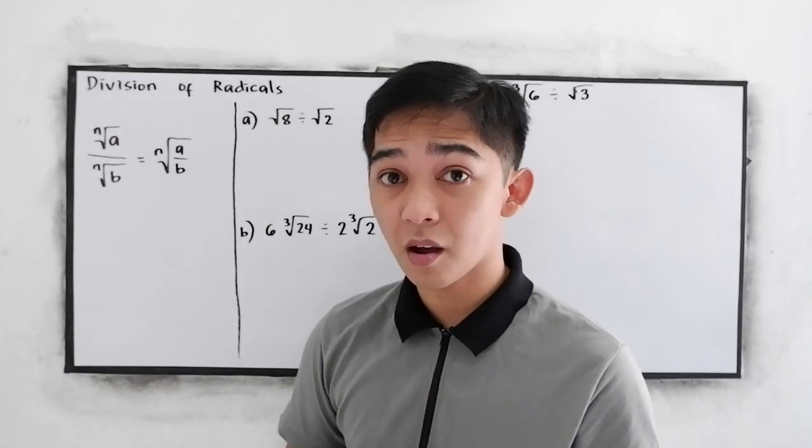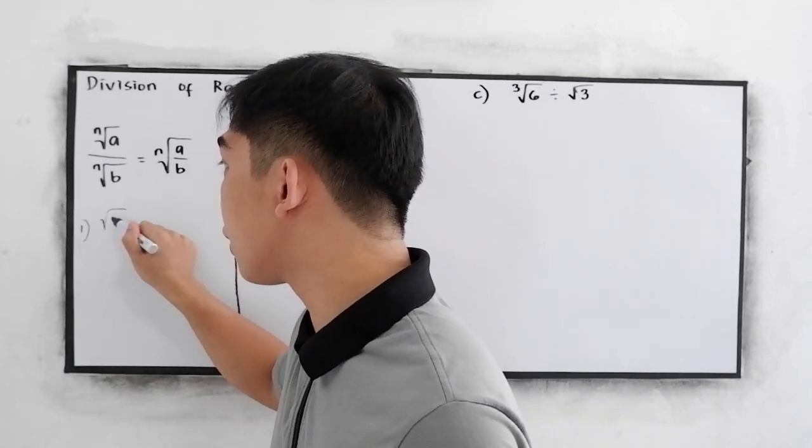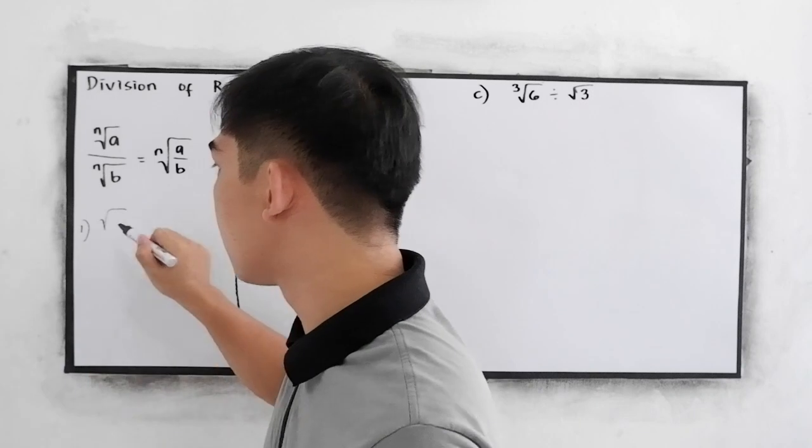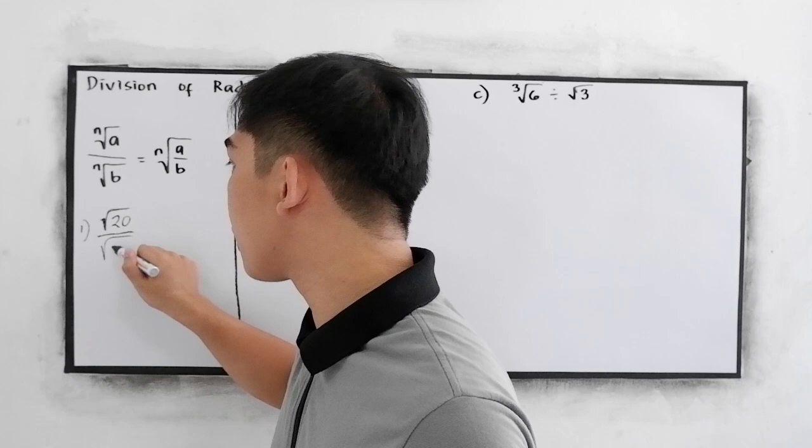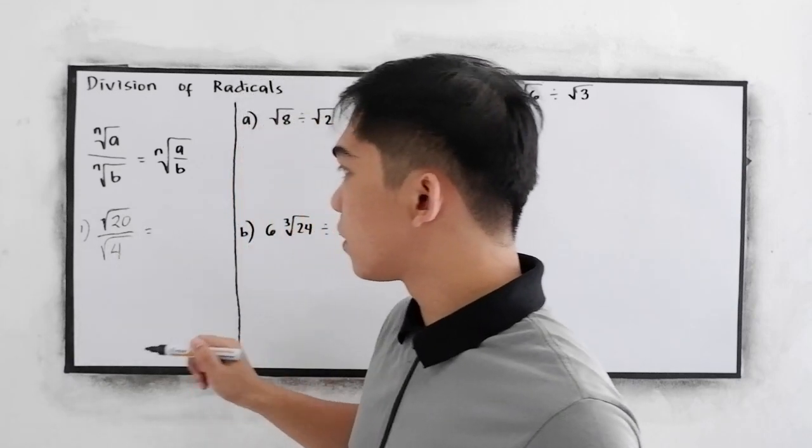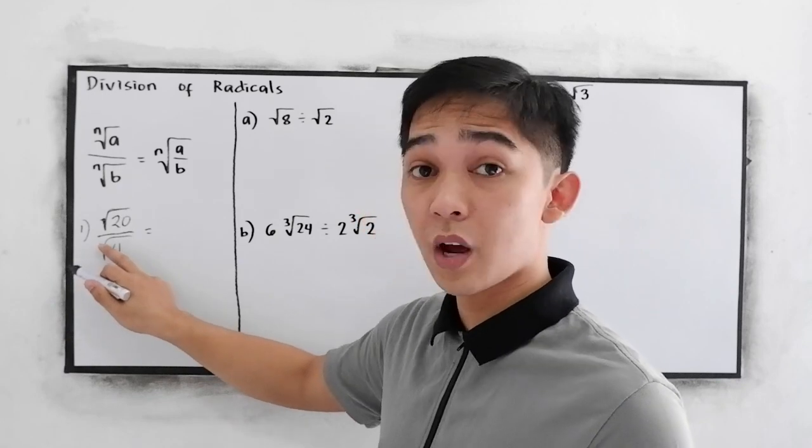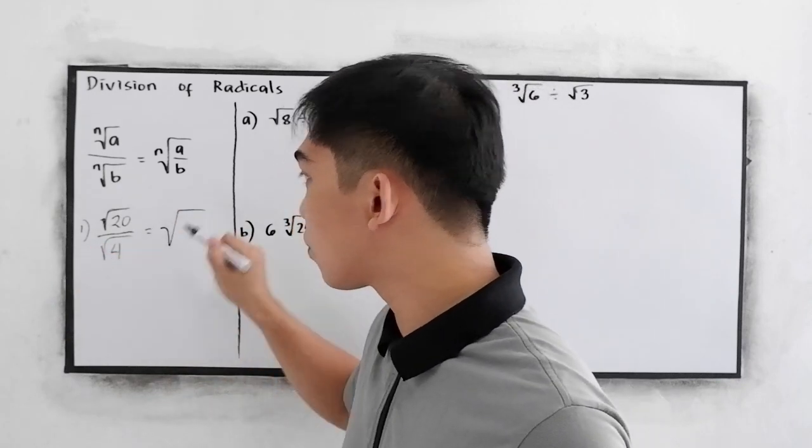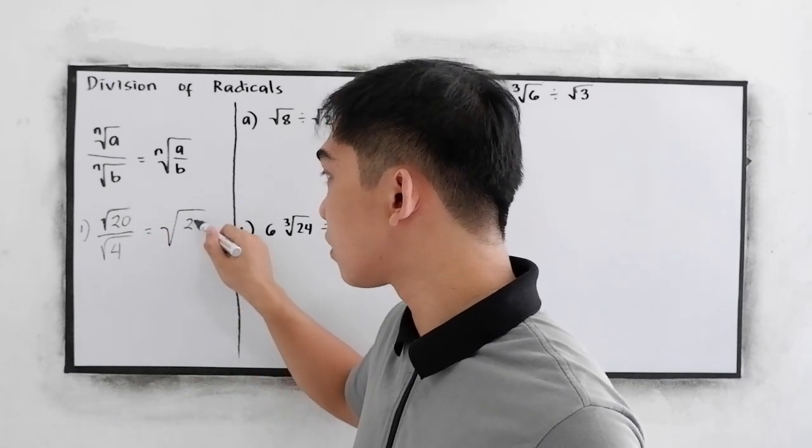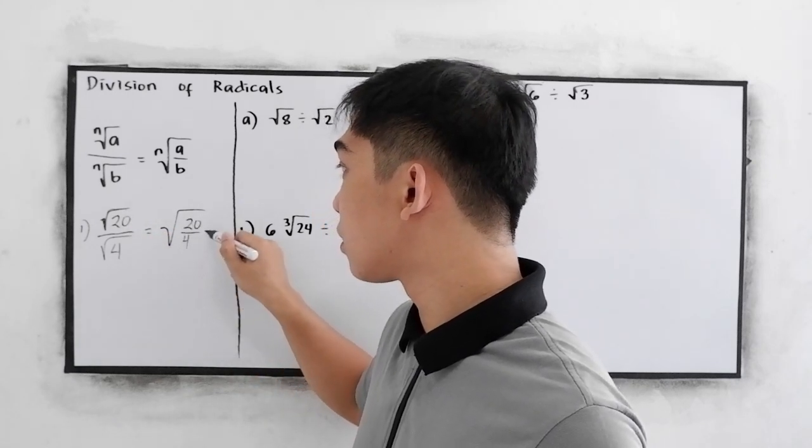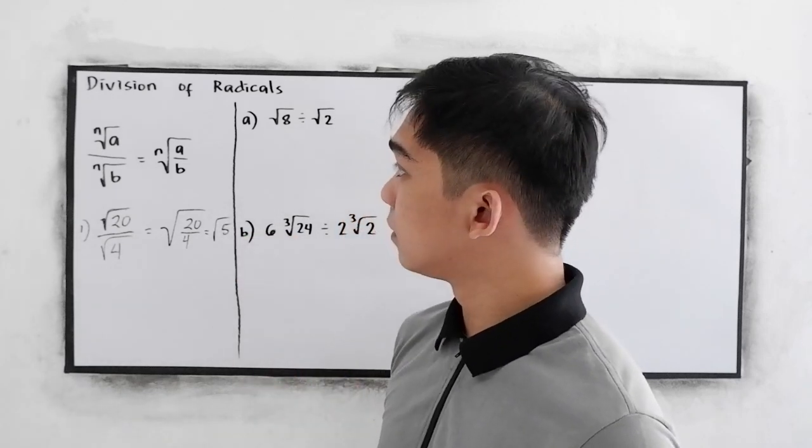Let's have our first example. If we have square root of 20 divided by square root of 4, we have indices which is 2 here and 2 in our denominator. So that is equal to square root of 20 divided by 4, square root of 5.